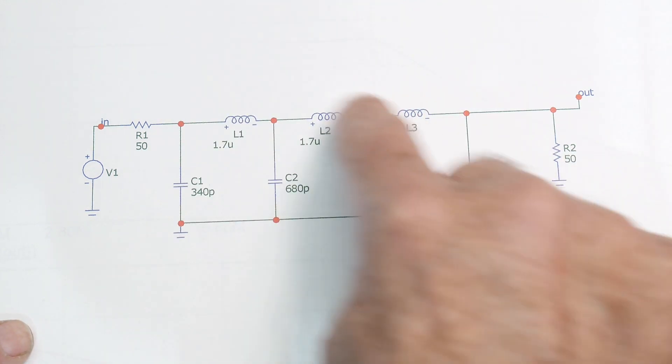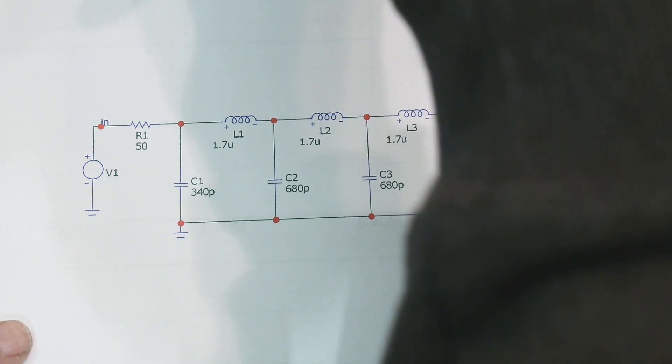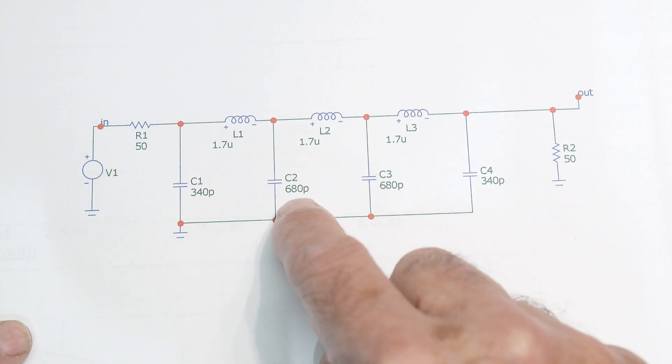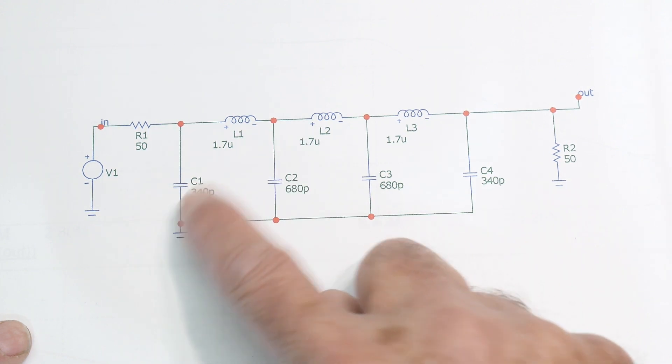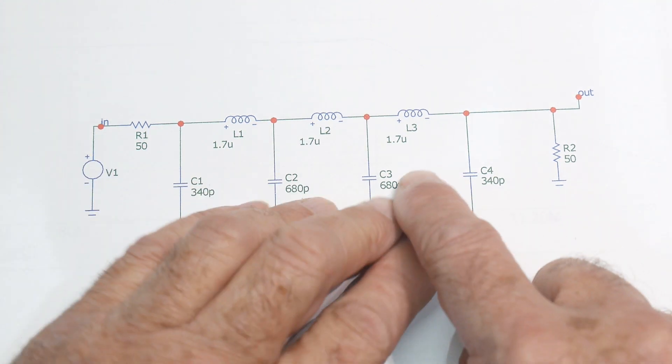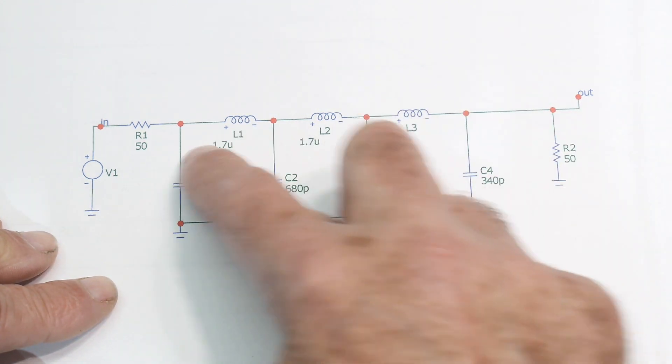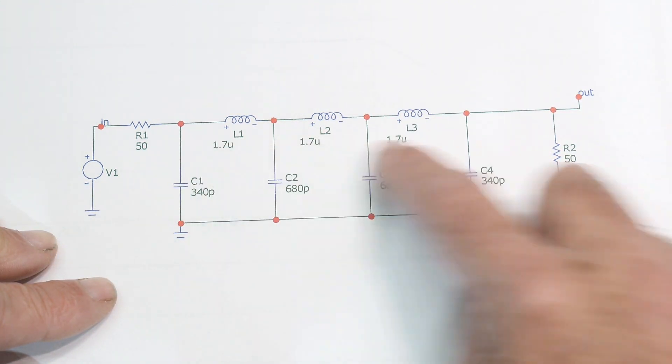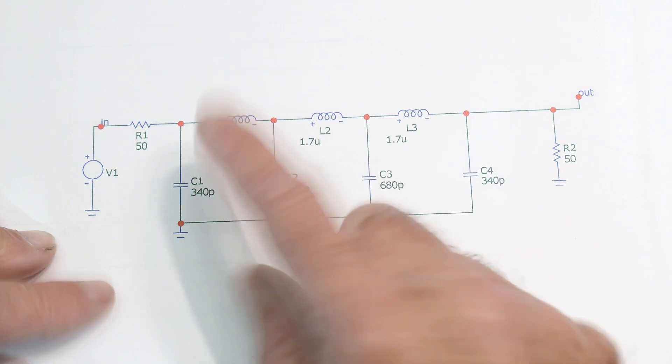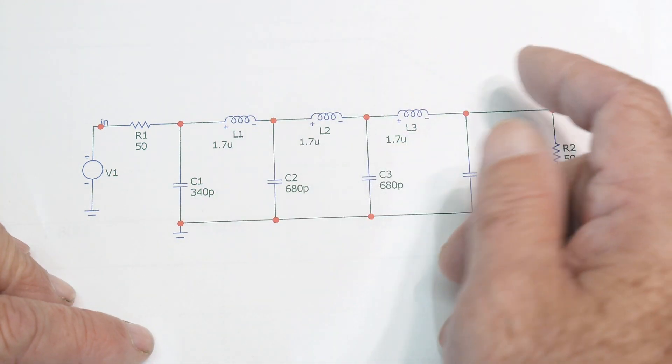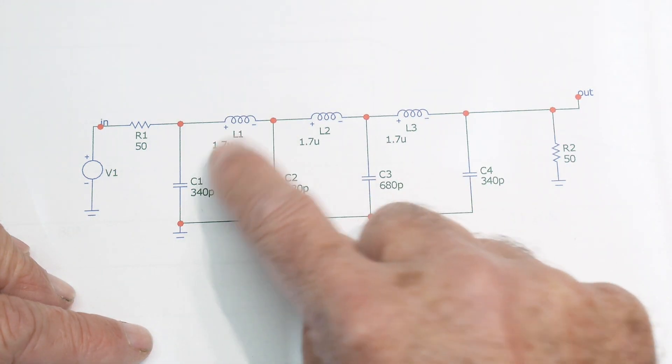The way I made the model was I used the capacitors I was using: the 340 and then two in parallel which is 680, so 340, 680, 680, and 340. Then I started modifying the inductors and put them all the same, ending up with 1.7, 1.7, and 1.7 for all three.